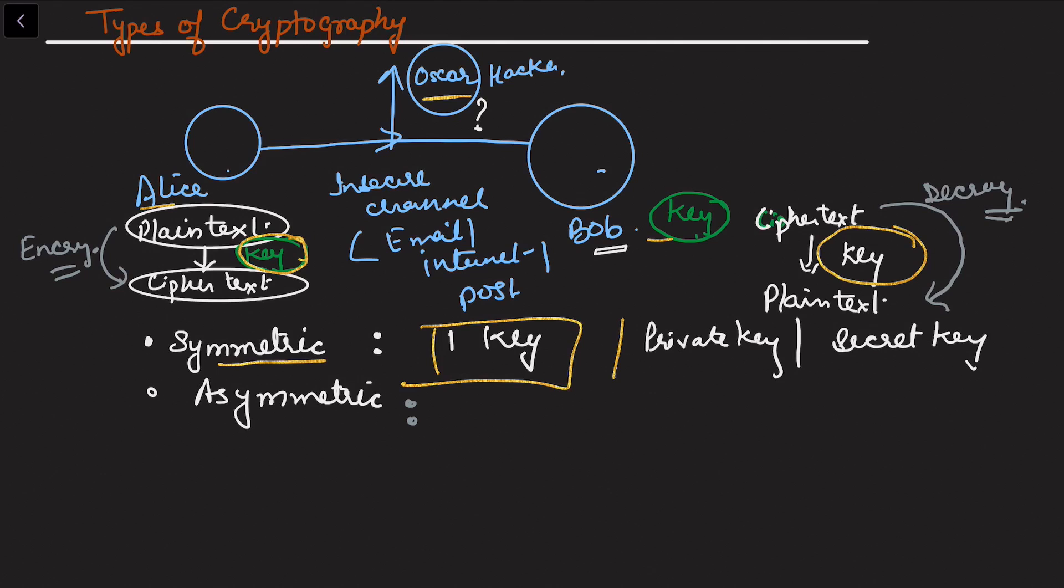Now in asymmetric, the name obviously suggests this has to be different from symmetric. Here we use more than one key. We can simply say more than one key, or we can say two keys, also known as public key cryptosystem or public key cryptography.